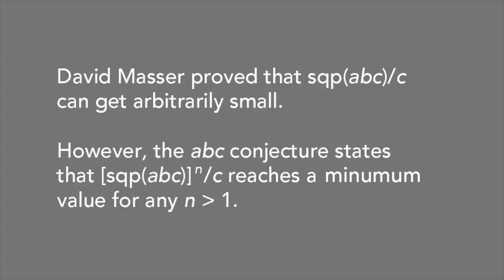In contrast, the ABC conjecture states that the square-free part of ABC to the N over C does reach a minimum value if N is any number greater than 1.